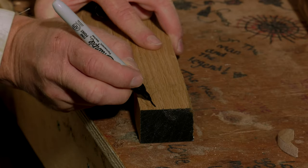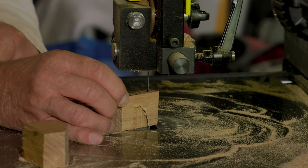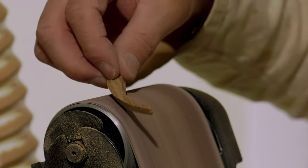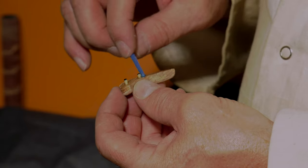Now the drawer handles are cut out on the bandsaw and shaped on the bobbin, belt and profile sanders. They are then glued into position on the drawers.